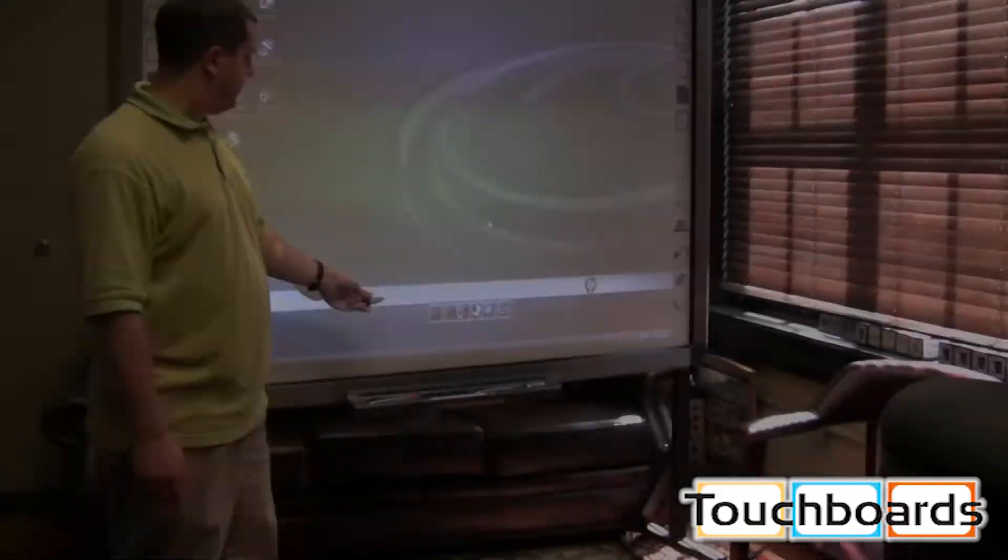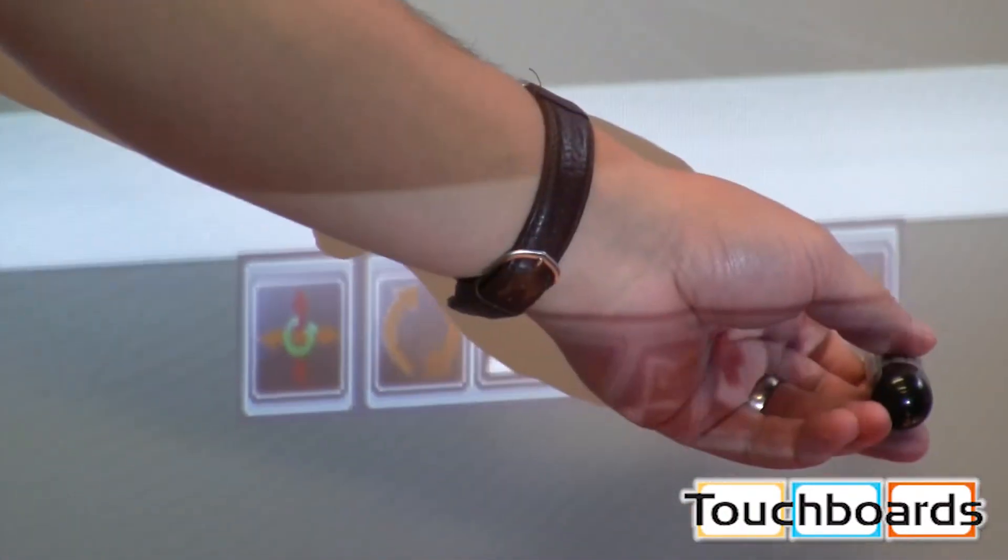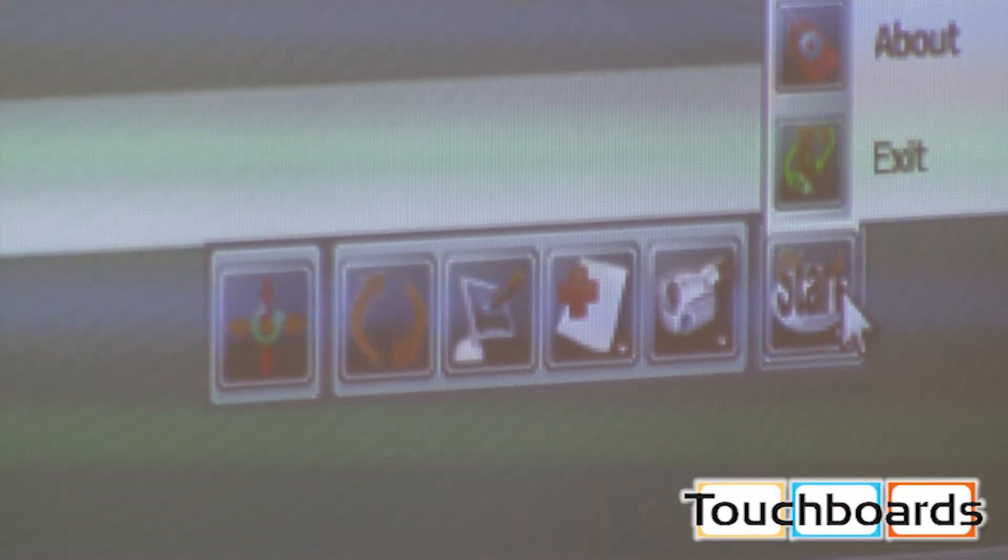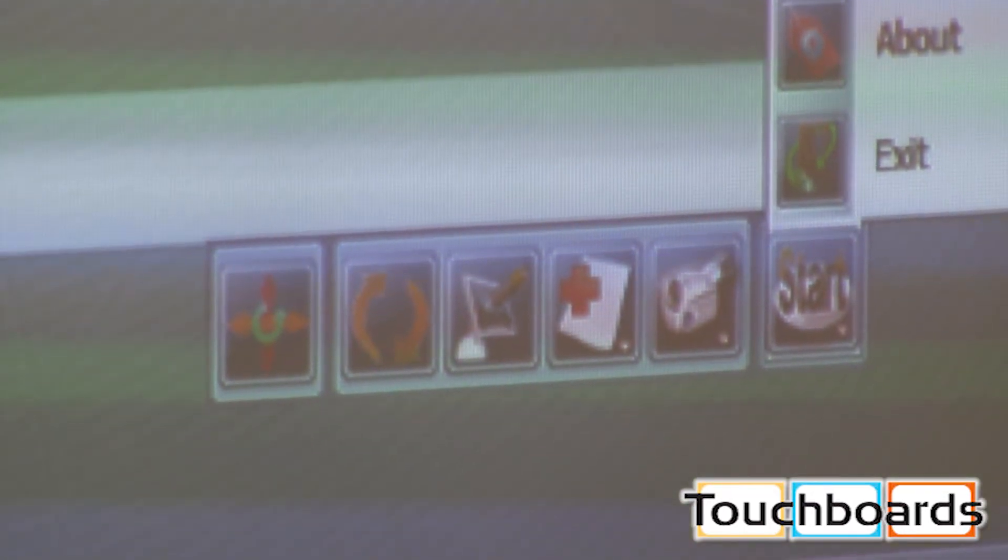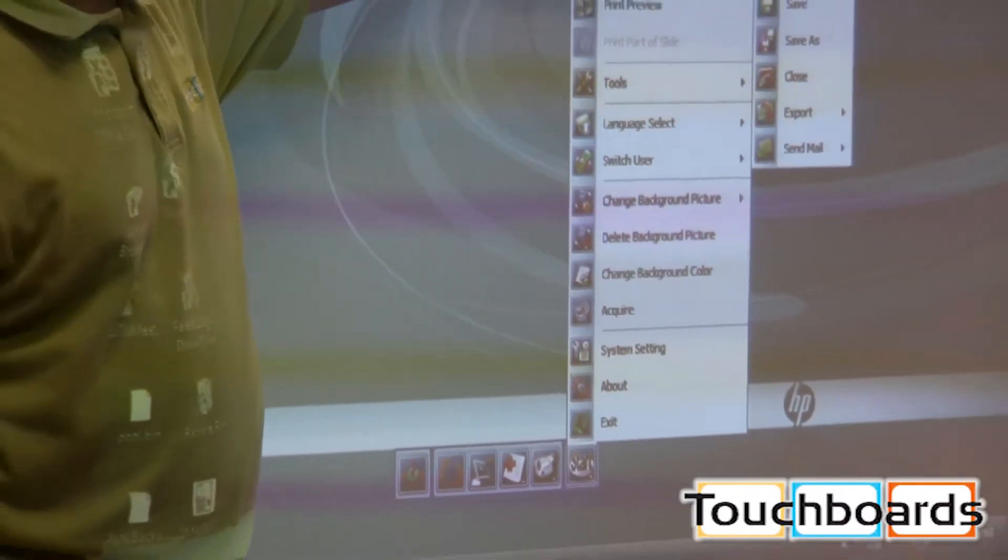So we hit OK to clear that off. This here is your toolbar, and we're going to start by hitting the Start button. It's going to give you a lot of options here. You have a file that you can save, export your documents that you save in there.